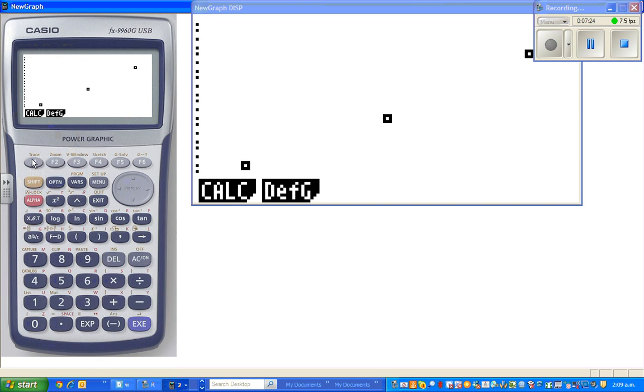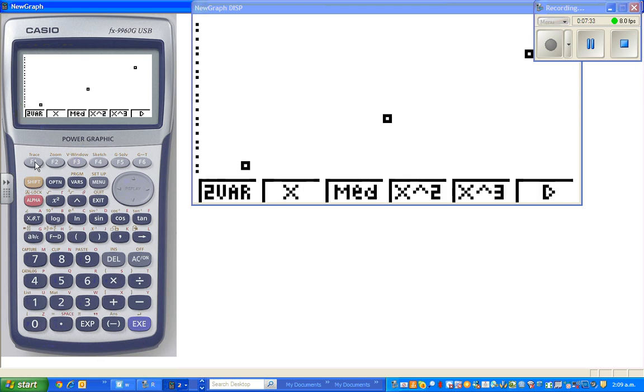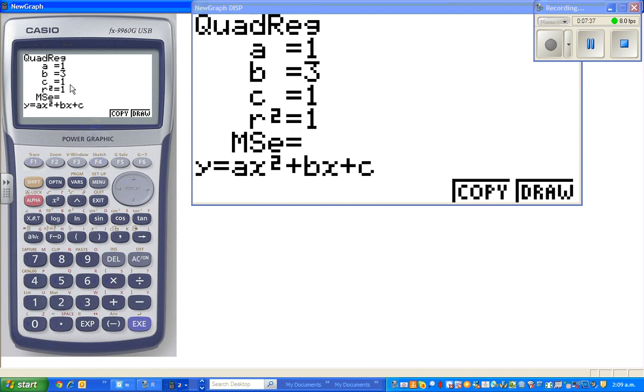So the calculator has drawn the scatter plot. Now I'll ask the calculator to give me the equation of a line or curve joining these. I already know this is a quadratic equation. So I'll say calculate. There we go. This is my a is 1, b is 3, c is 1.